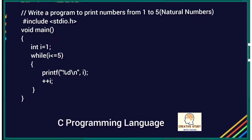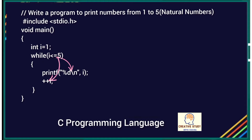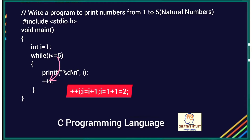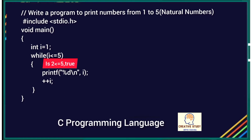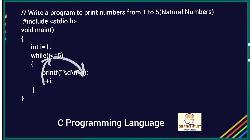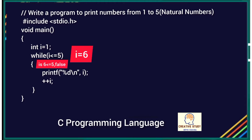Let's write a program to print numbers from one to five. Here, i is initialized to one. It is checked inside the while parenthesis: one is less than or equal to five — yes, it is true. So all statements inside the body of the while loop execute. First it prints the value of i, which is one, then the statement i++ is executed and the value of i becomes two. This process loops and it will print one, two, three, four, five.